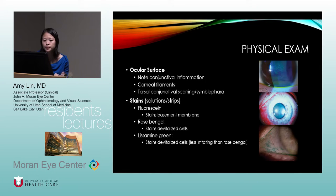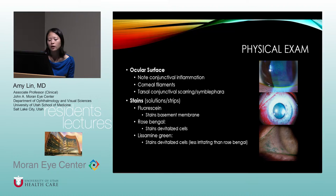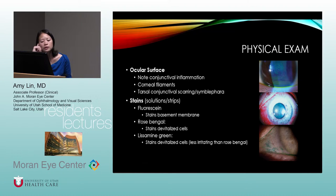We discussed tear breakup time earlier. Look at the ocular surface for conjunctival inflammation, corneal filaments (indicative of very severe dry eye), and tarsal conjunctival scarring seen in severe causes like Stevens-Johnson. Various stains are used: fluorescein stains basement membrane and is most common; rose bengal and lissamine green stain devitalized cells. Lissamine green is used more often than rose bengal because it's less irritating — even with anesthetic, rose bengal can still cause stinging.